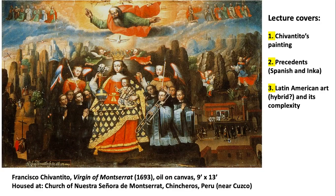This lecture focuses on this oil on canvas. Its title is Virgin of Montserrat. It was painted in 1693, so we are speaking about colonial Latin American art. It was painted by Francisco Chivantito, an artist of indigenous descent. He was an Inca, a person who was born in the Andes of indigenous descent.